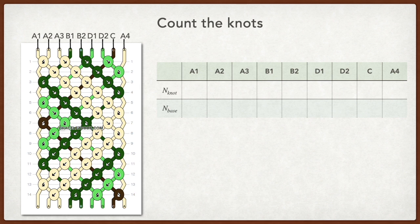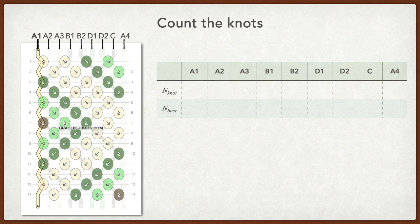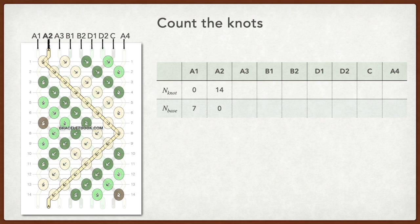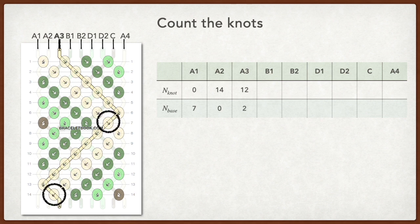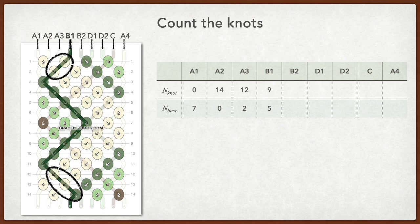To distinguish the strings of the same color, I'm going to give them labels as A1, A2, A3, B1, B2, etc. from left to right. For string A1, it's been the base string for the whole time. So it makes 0 knots as the knotting string, and 7 knots as the base string. String A2 is completely the opposite. It has never been a base string, and it makes 14 knots as the knotting string. For A3, it's 12 times as knotting string, and 2 times as the base string. Please pay attention to the direction of these two knots, circled here. We keep doing this until we fill up the table.